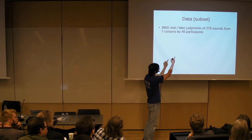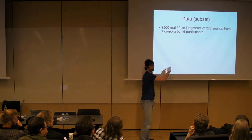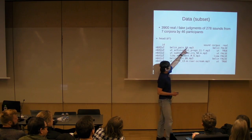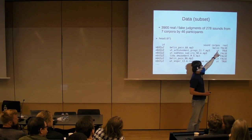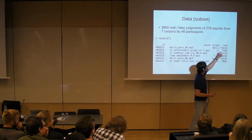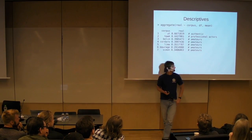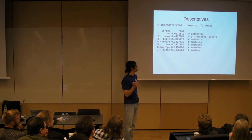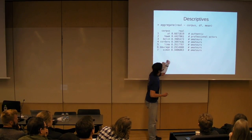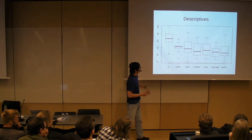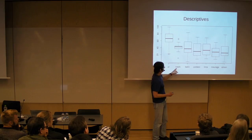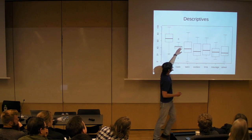We have multiple observations from the same participants for the same sounds, and we have seven different collections. We're primarily interested in comparing the sound corpora. Here's what the data looks like: ID is the participant, then we have the sound that they heard, from which corpus the sound comes — 'YT' is my abbreviation for YouTube, the real stuff. The response variable is whether they clicked the real button: true or false. The descriptive stats show the probability of clicking real was a bit higher for authentic sounds, and we want to compare this with everything else.